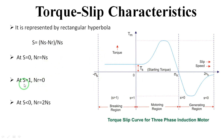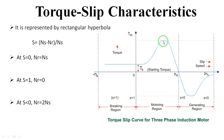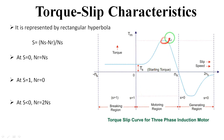At slip equal to one, the torque will be very less initially for the induction motor. The torque will develop slowly to the maximum position, which is called maximum torque, indicated by Tm. As the slip increases or decreases, the torque also changes. At s equal to one, the torque increases slowly.